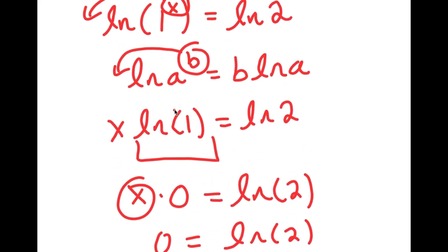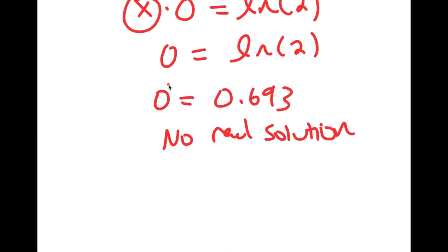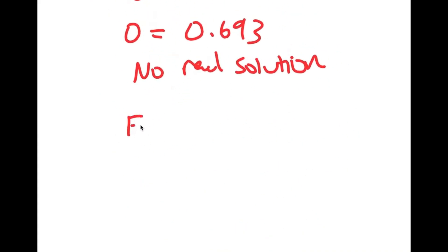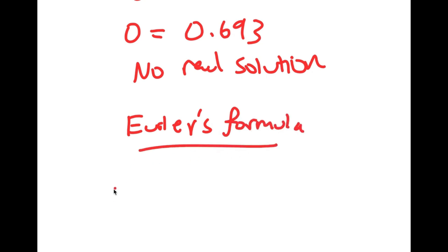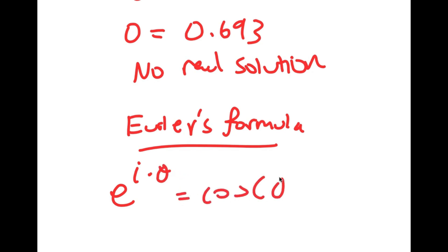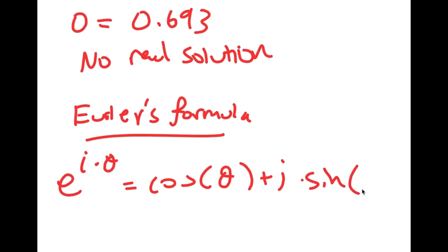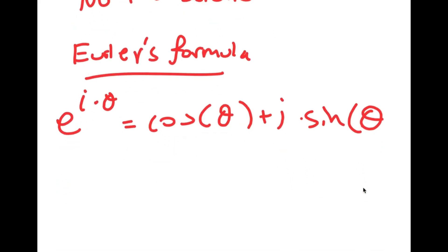However, there is still a way to find the value of x here. So, Euler's formula — this states that if I have something in the form e to the power of i times theta, this is equal to cosine of theta plus i times sine of theta. I know this may seem a little confusing right now, but just bear with me.